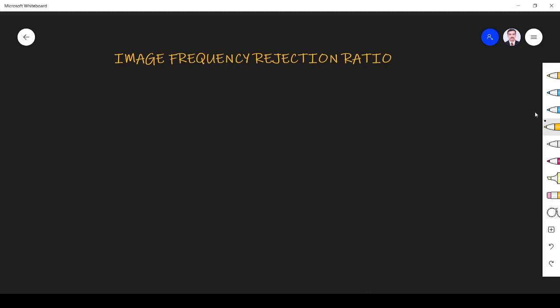Hi friends, in this video we learn about image frequency rejection ratio. First, we define what is image frequency rejection ratio. It occurs in the superheterodyne receiver.